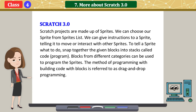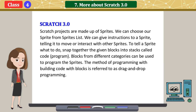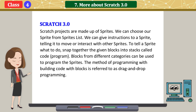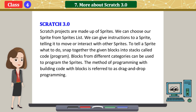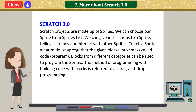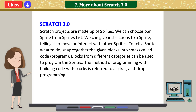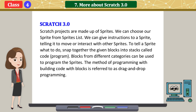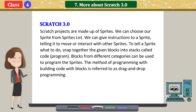Scratch projects are made up of sprites. We can choose our sprite from the sprites list. We can give instructions to a sprite, telling it to move or interact with other sprites. To tell a sprite what to do, snap together the given blocks into stacks called code. Blocks from different categories can be used to program the sprites. The method of programming by building code with blocks is referred to as drag and drop programming.